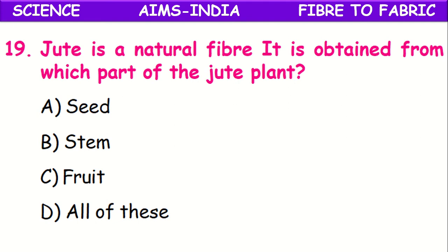Jute is a natural fiber. From which part of the jute plant is it obtained? Jute is one of the natural fibers because it is obtained from plants — it is a plant fiber. It is obtained from the bark, that is, from the stem of the jute plant.